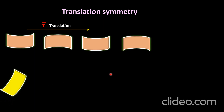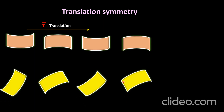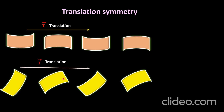Consider another set of motifs extended left and right. Again, there is a specific arrangement where corresponding motifs are the same, so there is translation symmetry. If we apply the translation symmetry operation from one position to the next, we get the same pattern. Both sets of motifs possess translation symmetry.